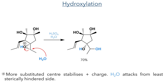This epoxide was then hydrolyzed using sulfuric acid in water. This protonates the epoxide, making it more electrophilic, and allows water to attack, opening the epoxide to produce the product in a 70% yield. The water attacks from the less substituted side, as epoxides when protonated will shift the bond length to allow the positive charge to be stabilized by the more substituted side, and thus this installs a hydroxyl group with the correct stereochemistry.